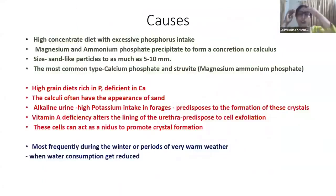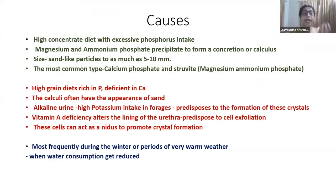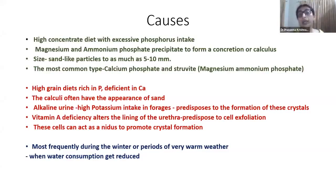The causes of urolithiasis include the development of stones in the bladder or kidney. A high-concentrate diet containing excessive phosphorus is a major cause. Magnesium ammonium phosphate has a tendency to precipitate and form concretions, ranging from sand-like particles to stones five to ten millimeters in size. The most common type of stones are calcium phosphate and magnesium ammonium phosphate stones.